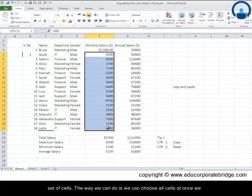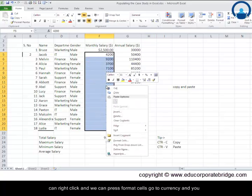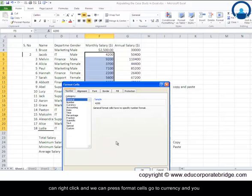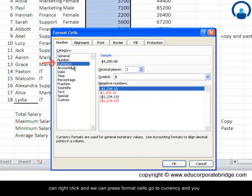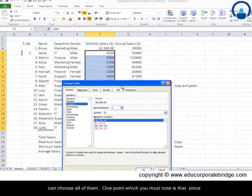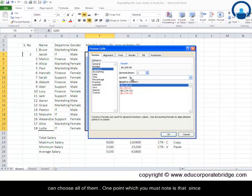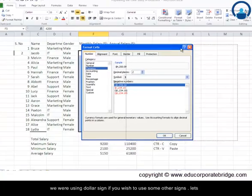Now what happens when we want to convert the other set of cells? The way we can do it is we can choose all cells at once, you can right-click, you can press Format Cells, go to Currency, and you can choose all of them.